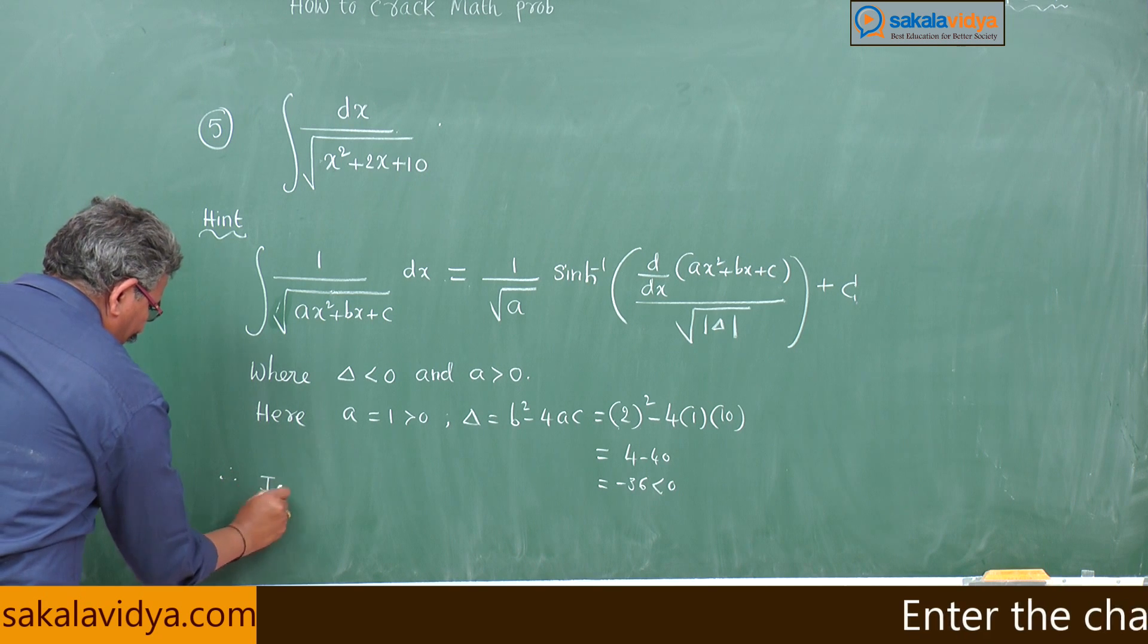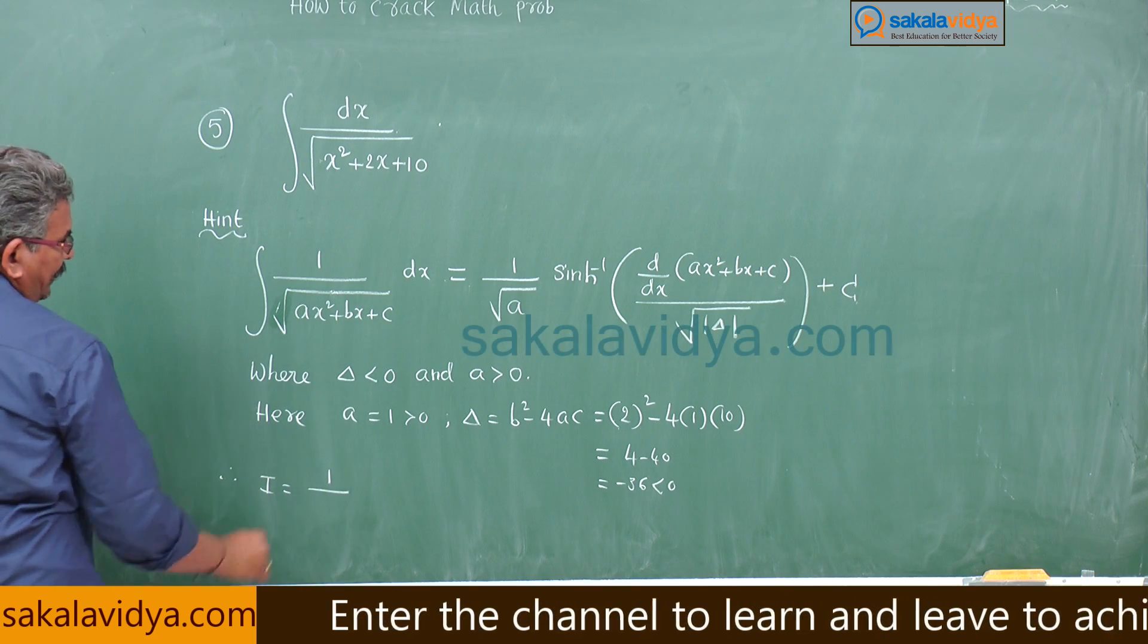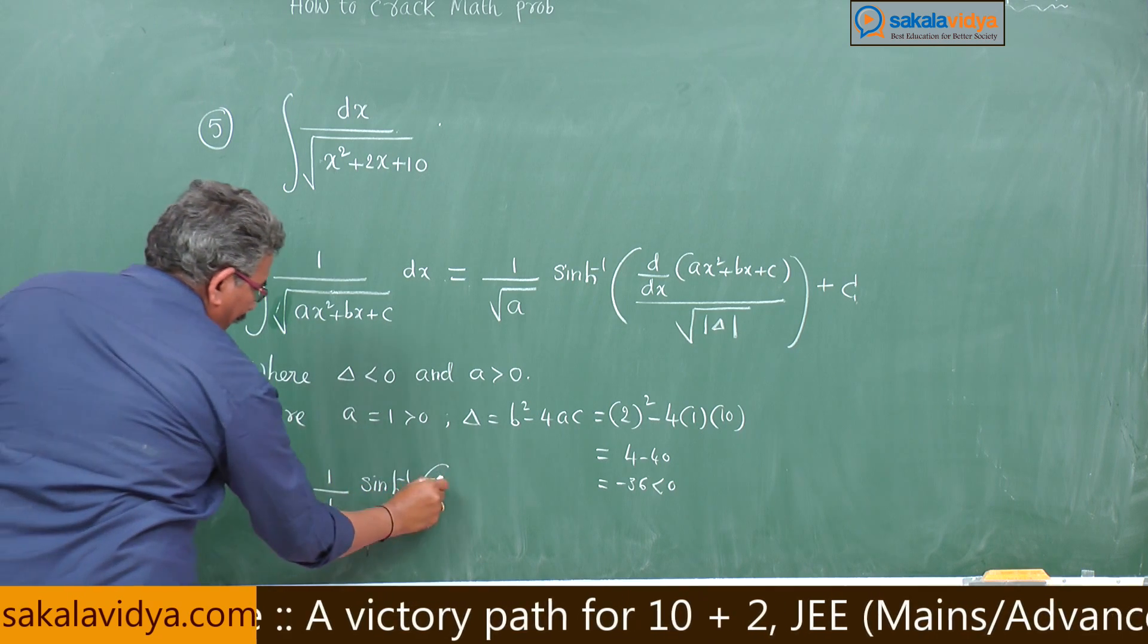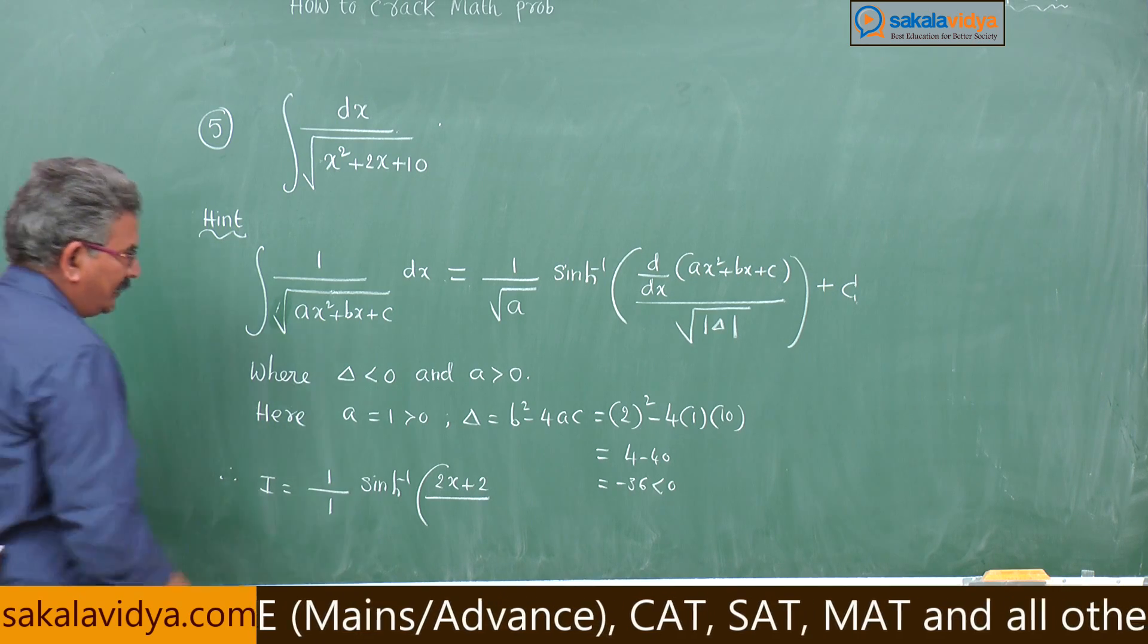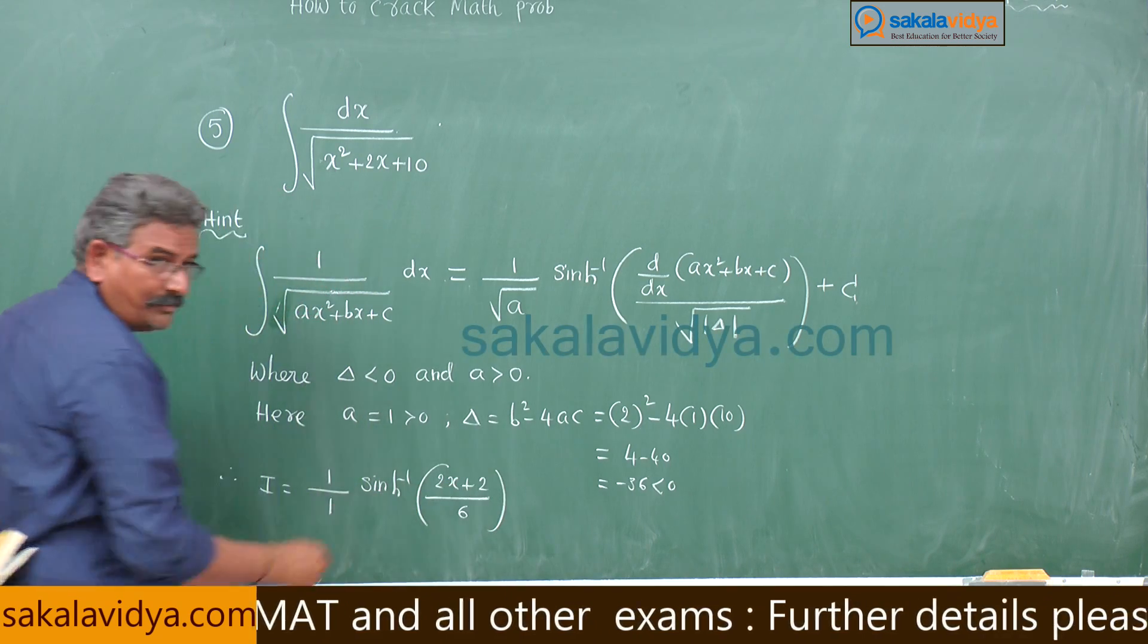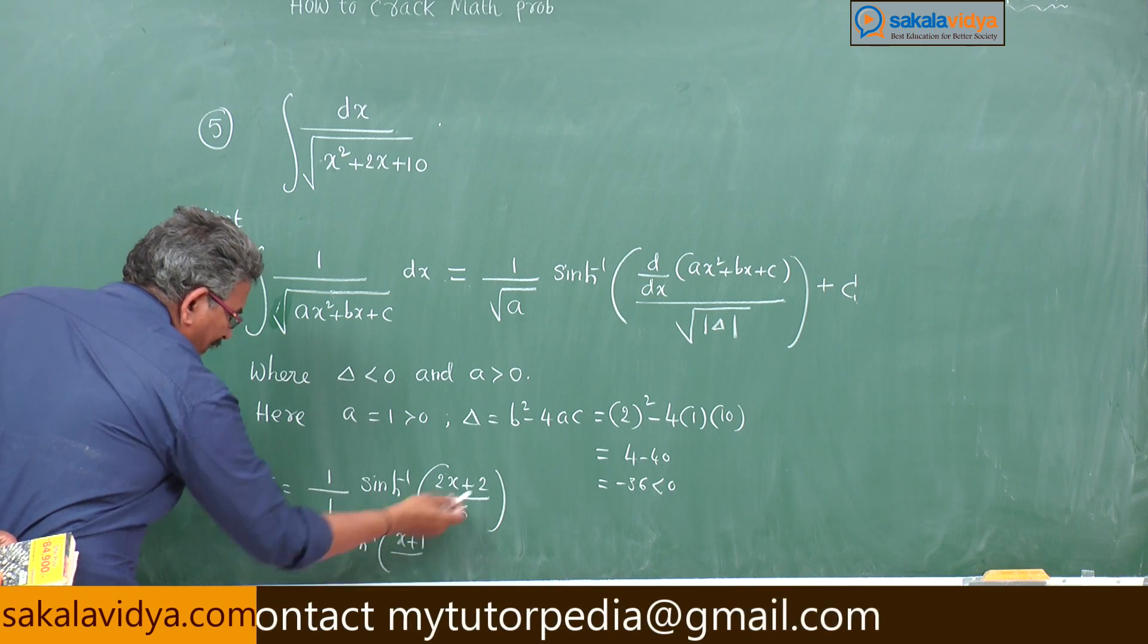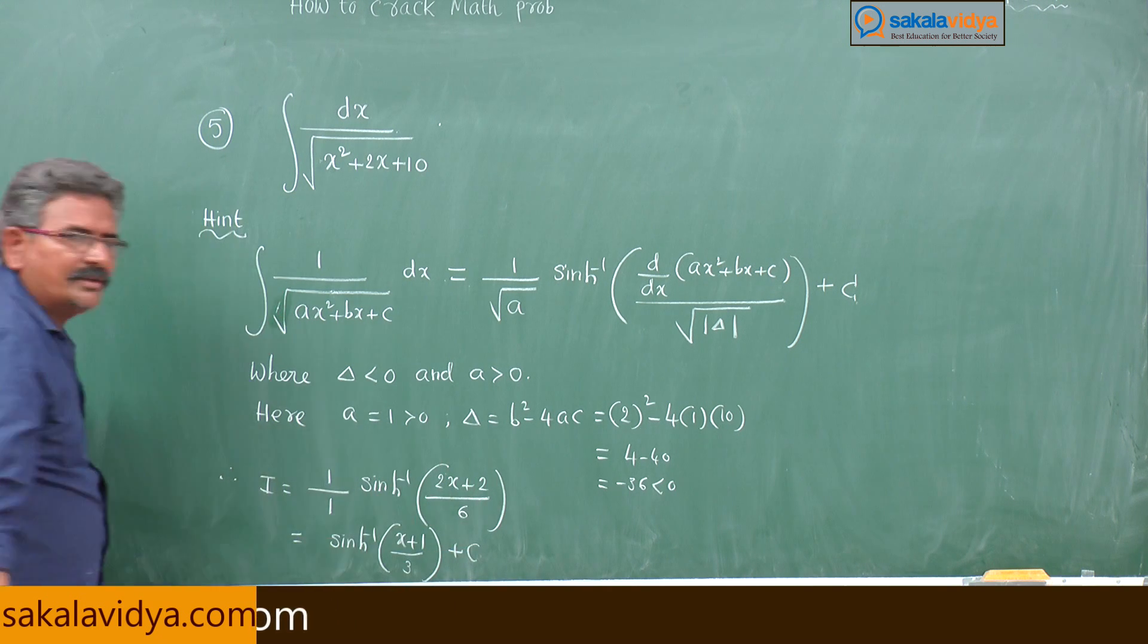Therefore i equals to, if you say this is integral i, 1 by root a, here a means 1, sinh inverse derivative of this x square plus 2x plus 10, that will be 2x plus 2 and upon root mod delta, that means numerical value of delta 36, root 36 is 6. We take 2 common. This is nothing but sinh inverse of x plus 1 by 3 plus constant of integration. Have you followed?